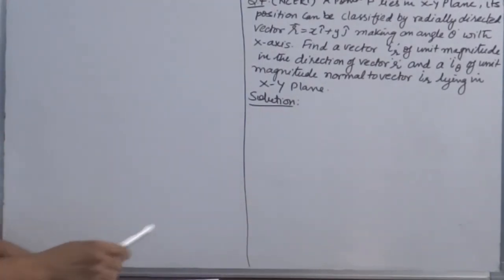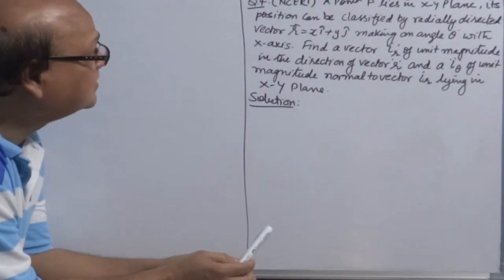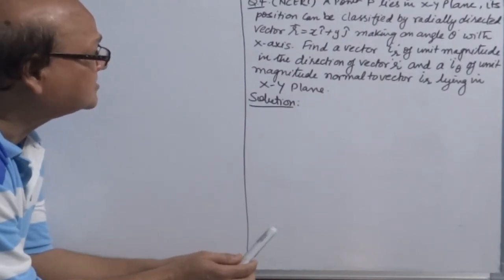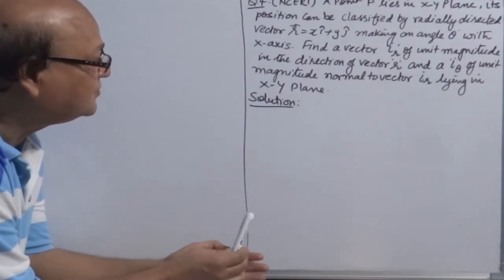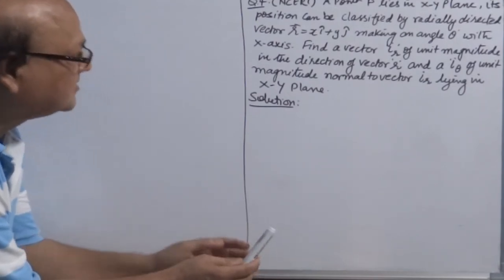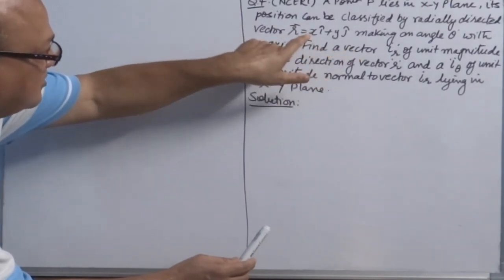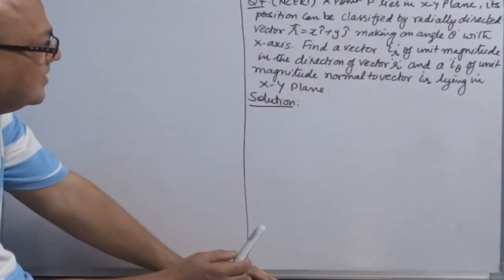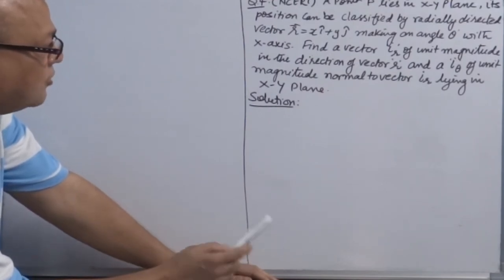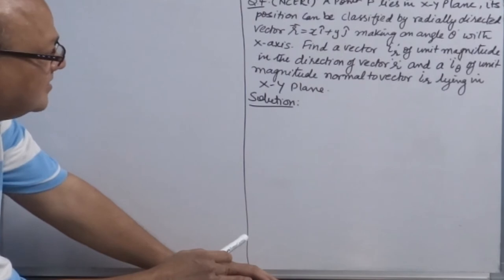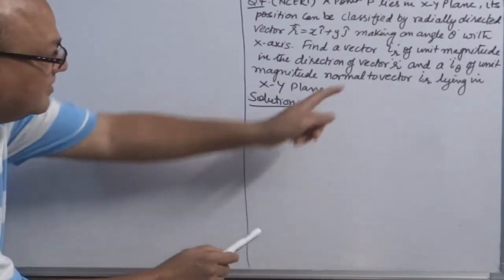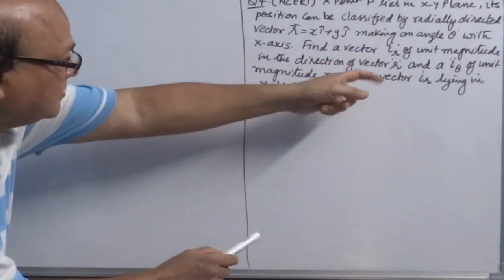Let's see one NCERT question. A point P lies in the x-y plane. Its position is described by radially directed vector r = x î + y ĵ, making angle θ with the x-axis. Find a unit vector îr in the direction of vector r, and a unit vector îθ of unit magnitude normal to îr — so you have to find two perpendicular unit vectors, both lying in the x-y plane.